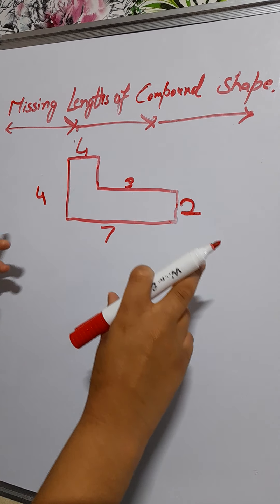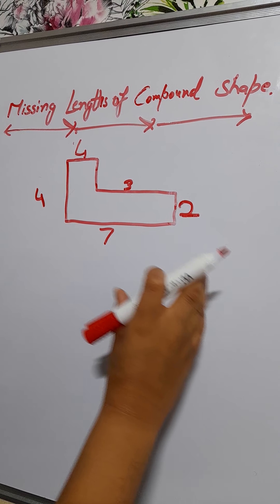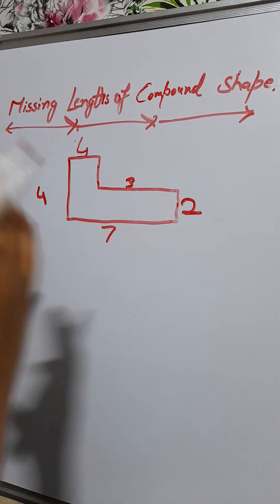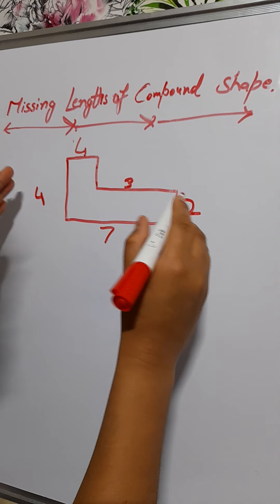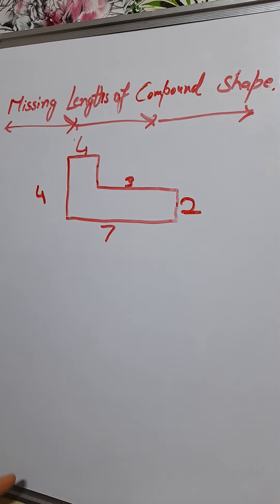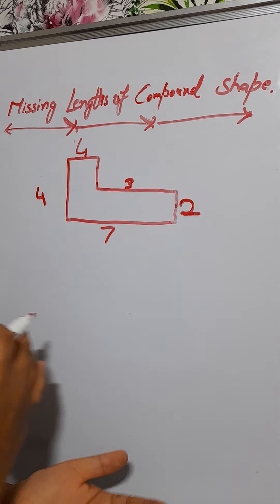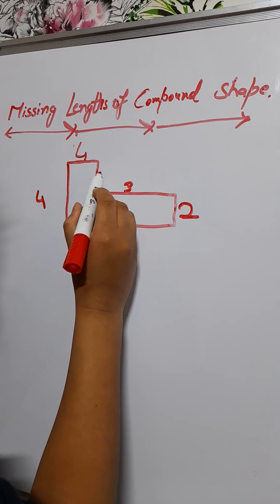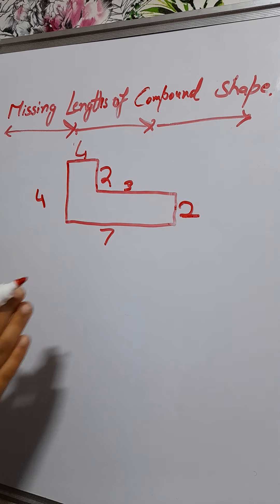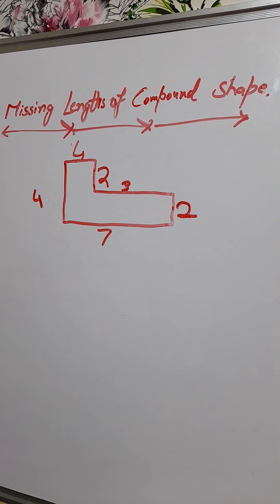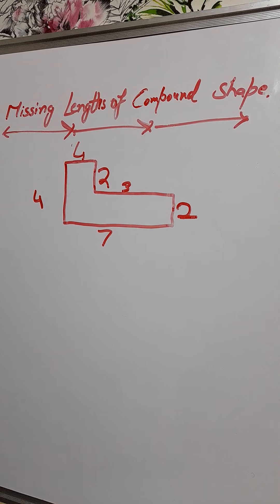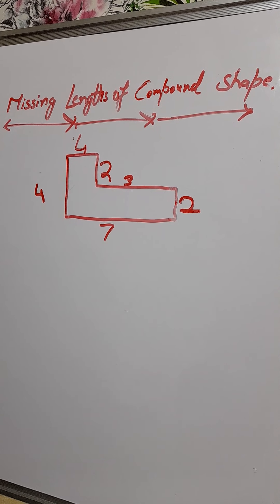Now we flatten the shape and think about the other missing length. Four minus two gives us an answer of two. So we put two here — and now we've found both missing lengths.